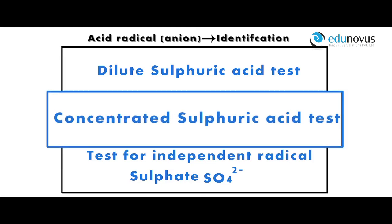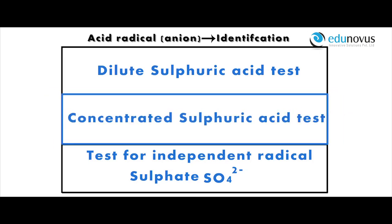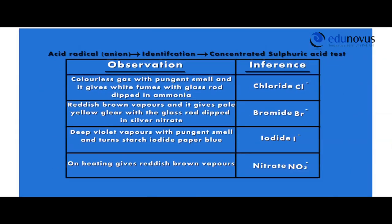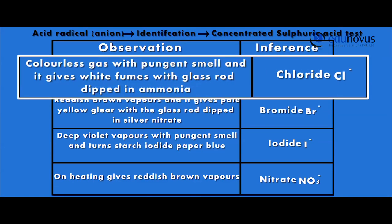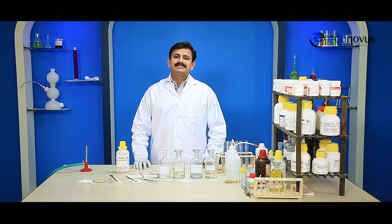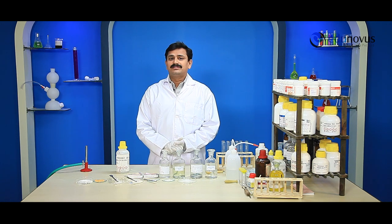Concentrated Sulfuric Acid Test. Some salts which do not react with diluted H₂SO₄ will react with concentrated H₂SO₄. In this test, we take a small amount of the salt in a clean and dry test tube and add few ml of concentrated sulfuric acid. If it still does not react, then we heat the mixture on a constant flame. Let us see the action of concentrated sulfuric acid on the given salt.